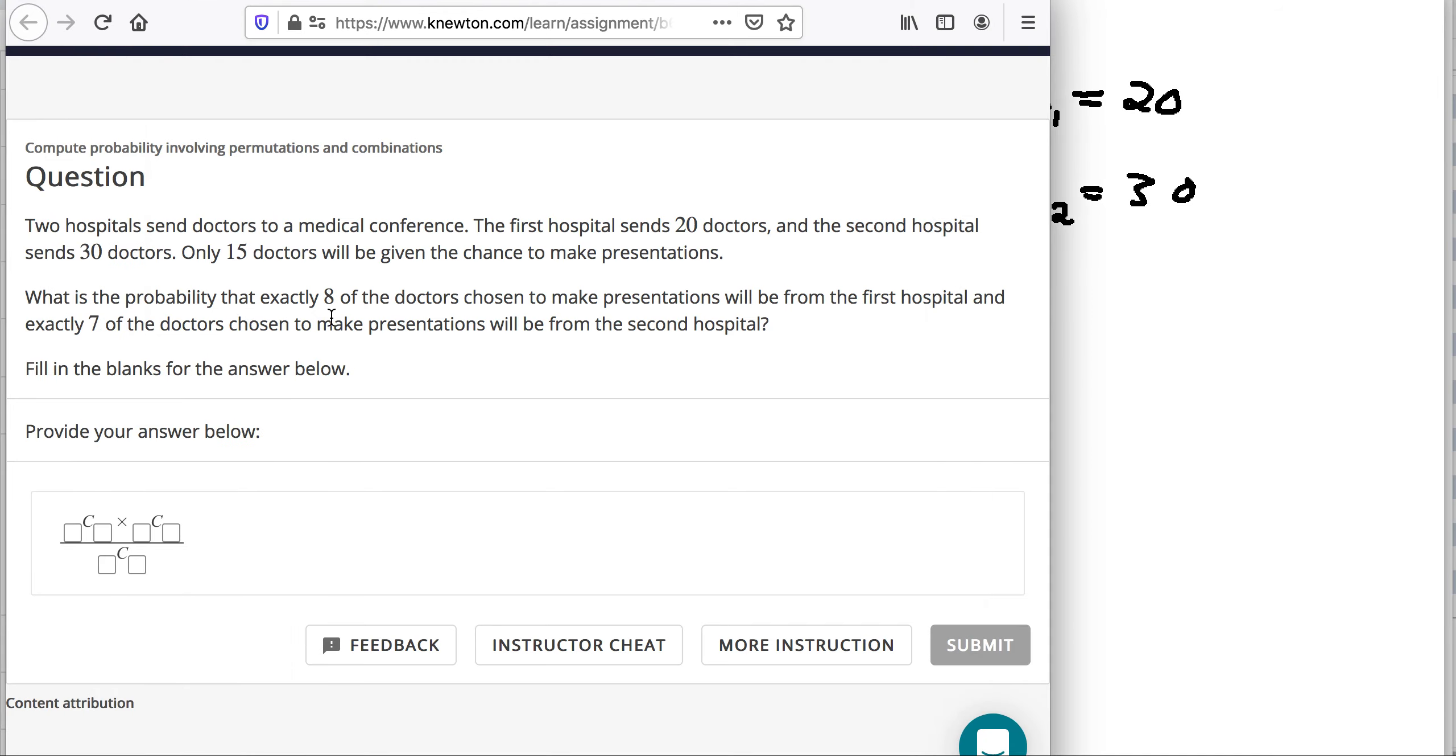So only 15 doctors will be given the chance to make presentations. We've got 50 total doctors, only 15 are going. What is the probability that exactly eight of the doctors chosen to make presentations will be from the first hospital? Well, exactly seven of the doctors chosen to make presentations will be from the second hospital.